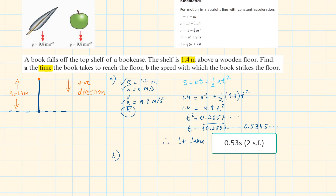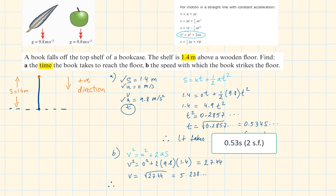For part B, we need to work out the speed. We use the formula without T: V squared equals U squared plus 2AS. Replacing the values, we have 0 squared plus 2 times 9.8 times 1.4, which equals 27.44. Square rooting this, we take the positive value. Finally, the book hits the floor with speed 5.2 metres per second to two significant figures.